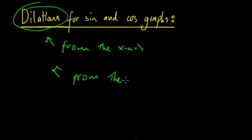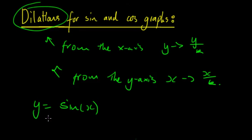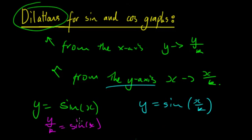These make a big difference depending on which one you're talking about. If you're talking about the x-axis, you're replacing y with y/k. If you're going from the y-axis, you're replacing x with x/k. The reason these create quite different effects is that if you have y = sin(x) and you replace y, the k is going to be on the outside — so you get y/k = sin(x), and k comes across on the outside of the trigonometric function. However, if we're looking from the y-axis and we replace x with x/k, we get y = sin(x/k), so k is now inside the trigonometric function, which affects the graph differently.